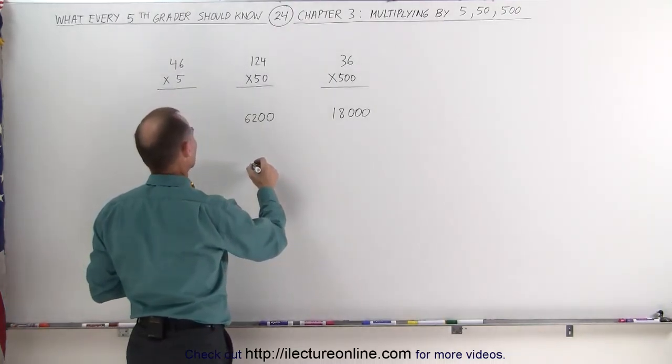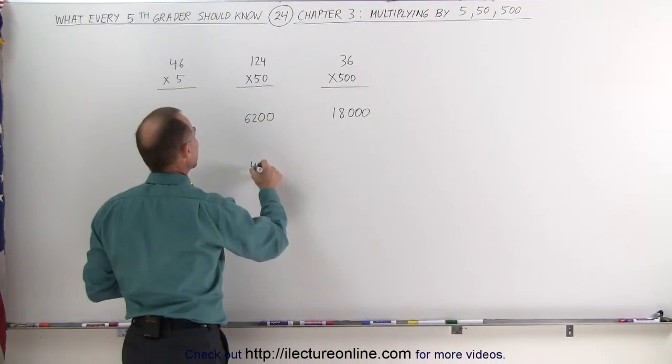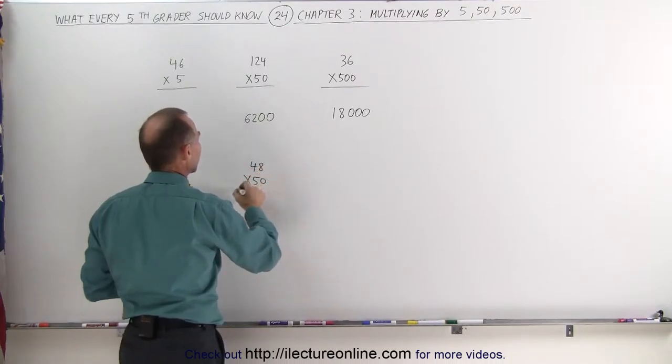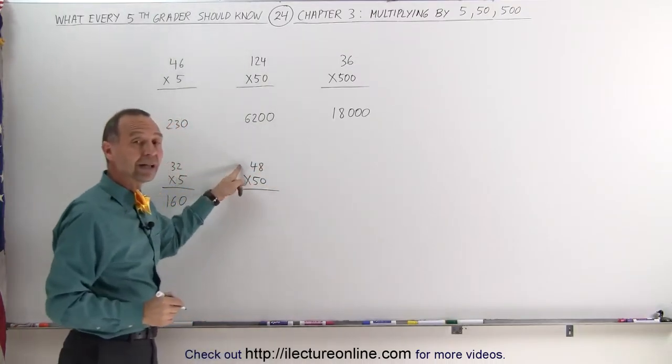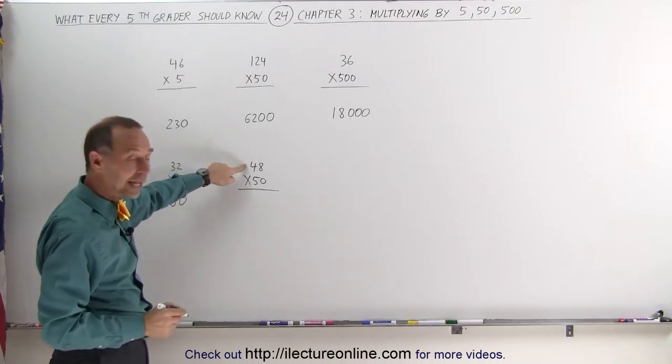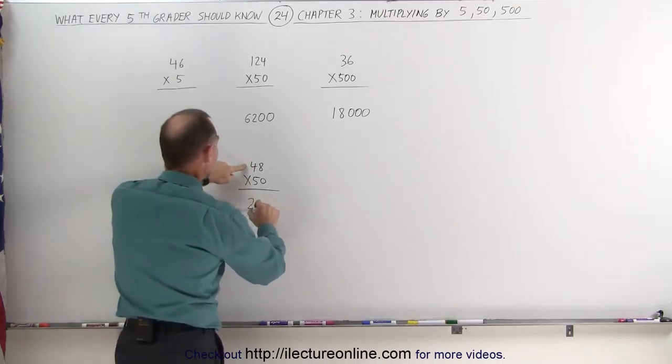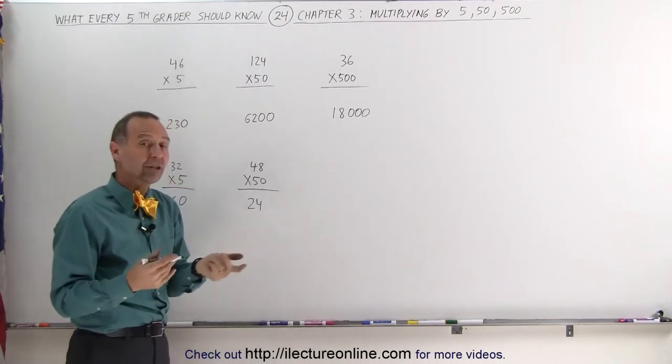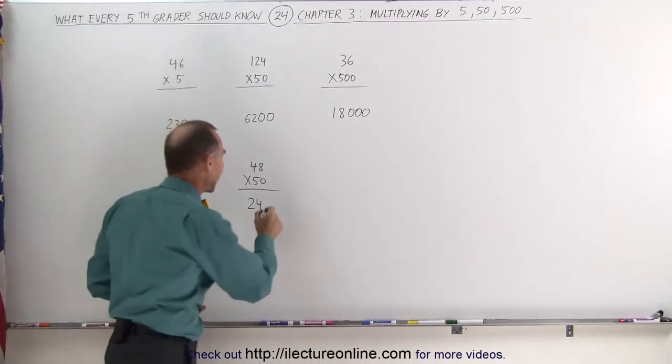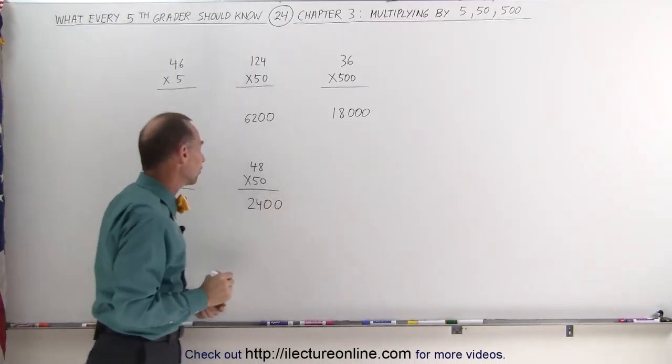How about this one here? Let's try 48 times 50. First what I do is I divide 48 by 2. Half of 48 is 24. And then I multiply times twice what 50 is, which is 100. Multiplying times 100 is like adding two zeros, and you get 2,400.